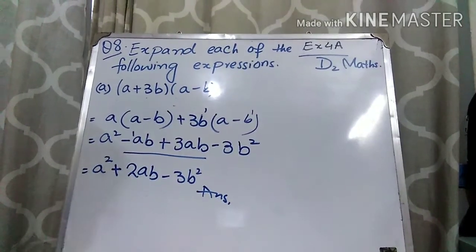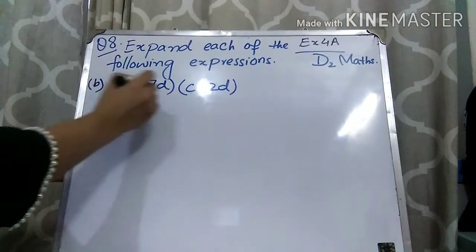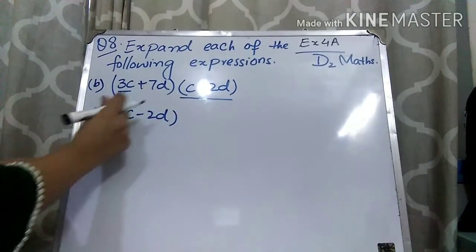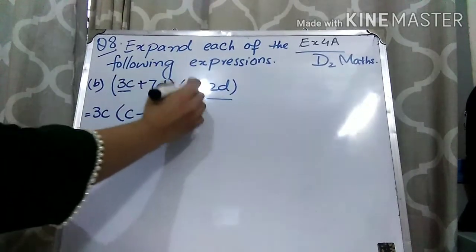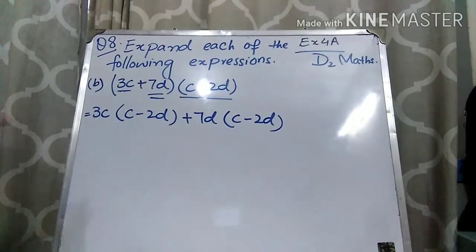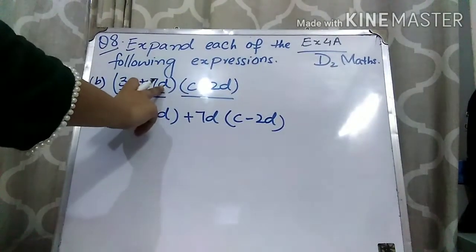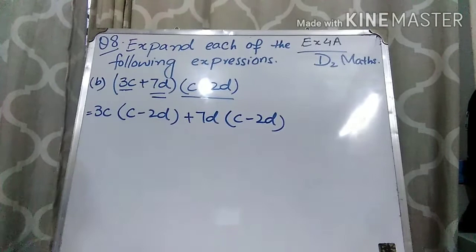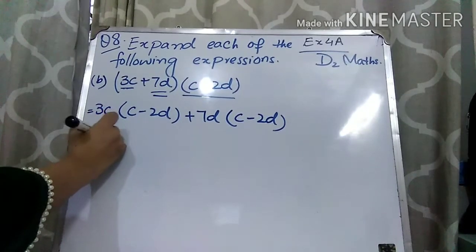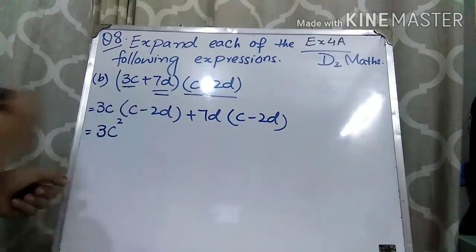Now let's move forward to part B. Once again you will follow the same rule — first you will multiply the first number with the second bracket: 3C times (C - 2B). Then you will multiply the second number, 7D, with the second bracket (C - 2B). First multiply the first number of the first bracket with the second bracket, then multiply the second number of the first bracket with the second bracket. Now multiply: 3 ones are 3, plus plus is plus. When you multiply C with C you will get C², because the same variables are multiplying so their powers will add.